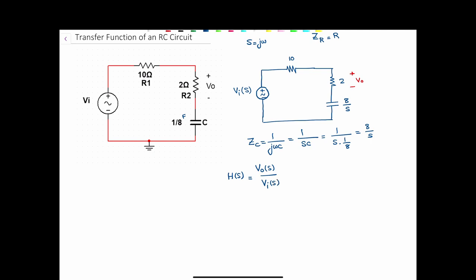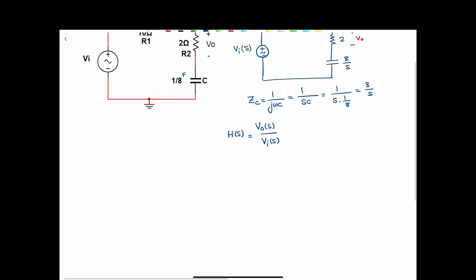This is a series circuit. R1, R2, and C are all in series. Therefore, I can use the voltage division to find the ratio between Vo and Vi.